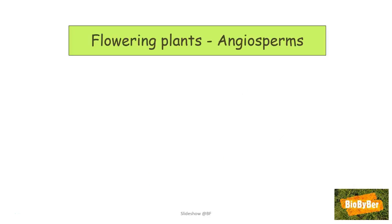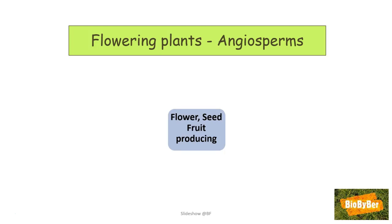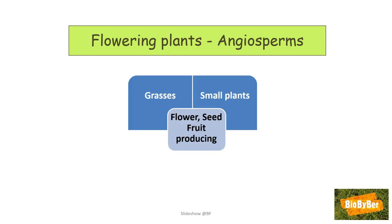Flowering plants, or angiosperms — be careful not to call them flowers. Flowers are individual blooms that you put in a vase; flowering plants are quite another story. Do not use the two words interchangeably. Flowering plants are plants that produce flowers, seeds, or fruit. Examples of angiosperms are grasses — yes, grasses produce flowers — as well as small plants we are familiar with, like dandelions, daisies, and buttercups.